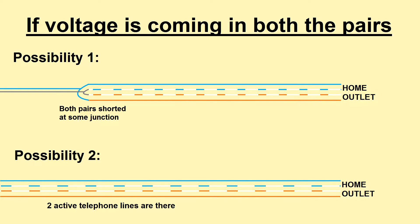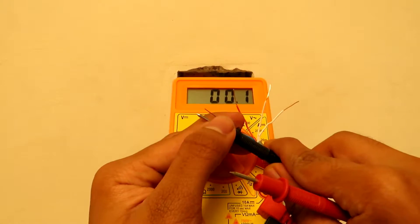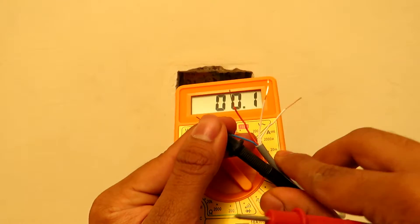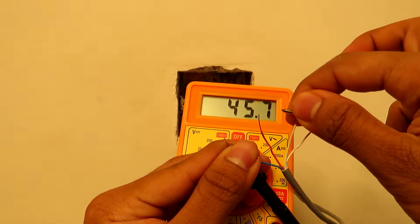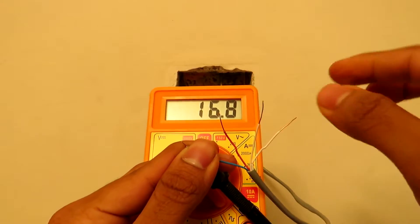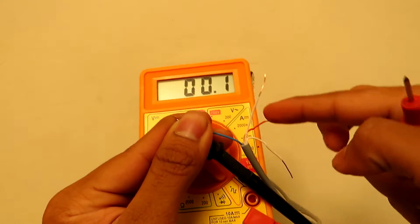If you get voltage even in the orange pair, that means that in some junction they have just given the same line to both the pairs, or you might actually have two active telephone lines for which you will need two sockets to connect. So out of total four attempts of testing, you will get around 48 volts in one combination. That is the active telephone pair and we will connect that to the telephone socket terminal.